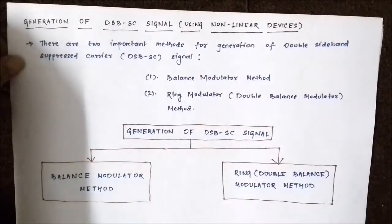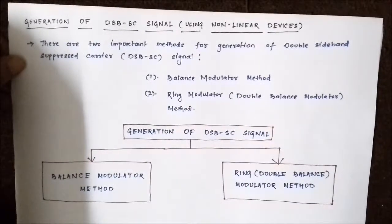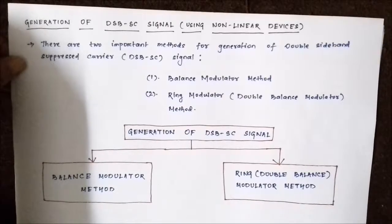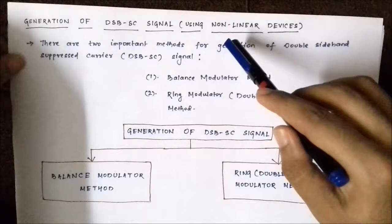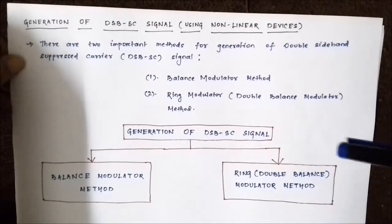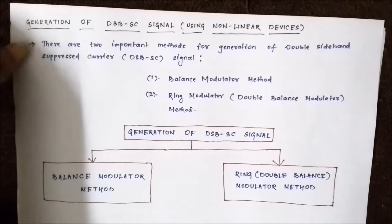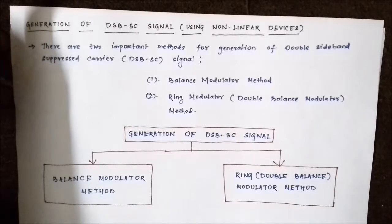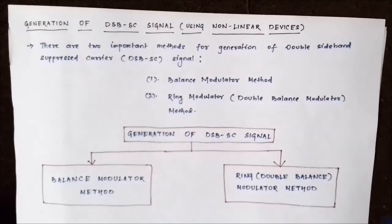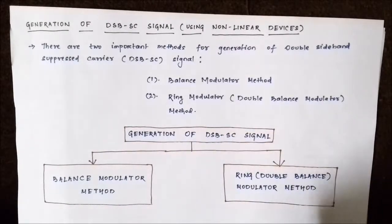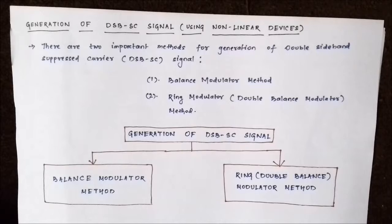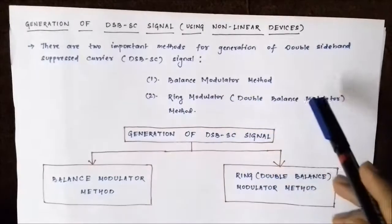Today's topic is about the generation of a double sideband suppressed carrier (DSBSC) signal. We are using nonlinear devices for the generation of such a signal. Using nonlinear devices, there are two main methods: first, the balanced modulator method; second, the ring modulator method. We are going to discuss them separately. Today's video topic is about the balanced modulator method.